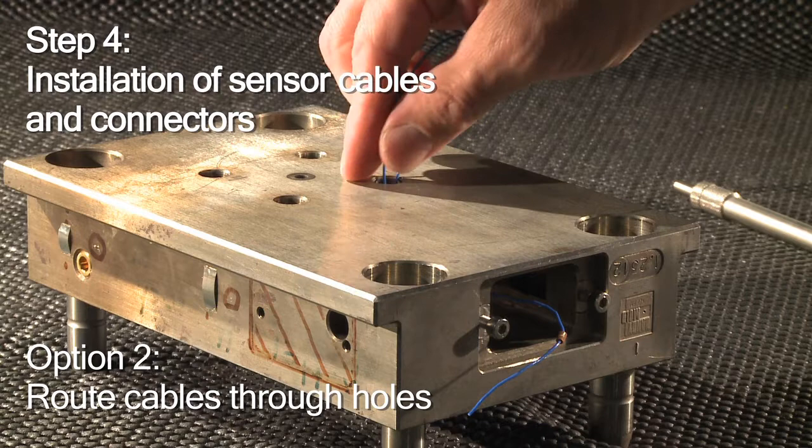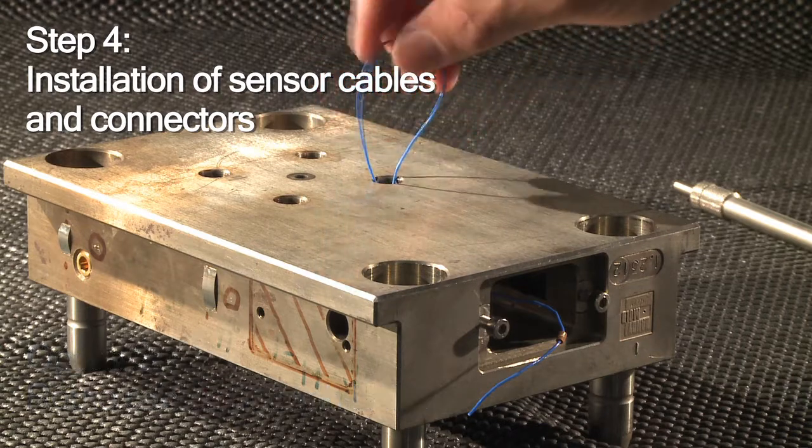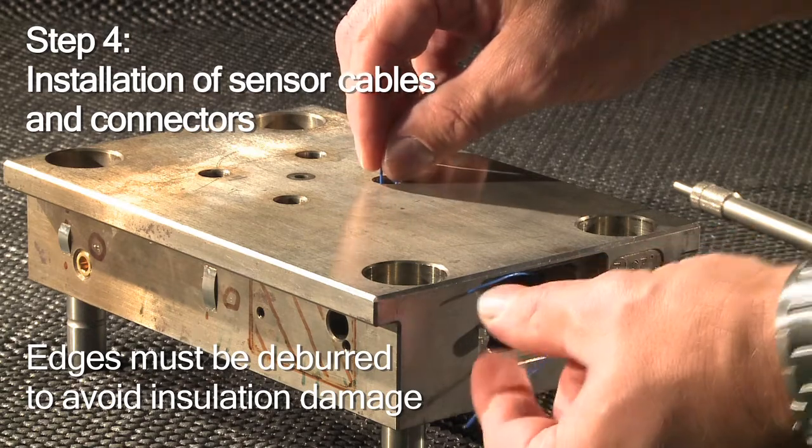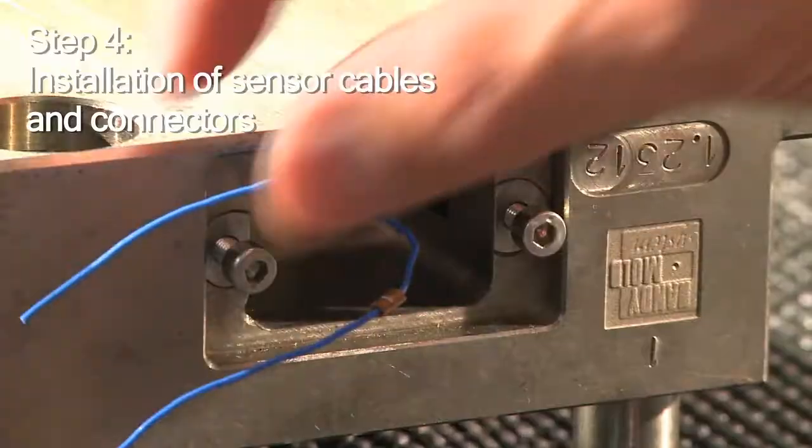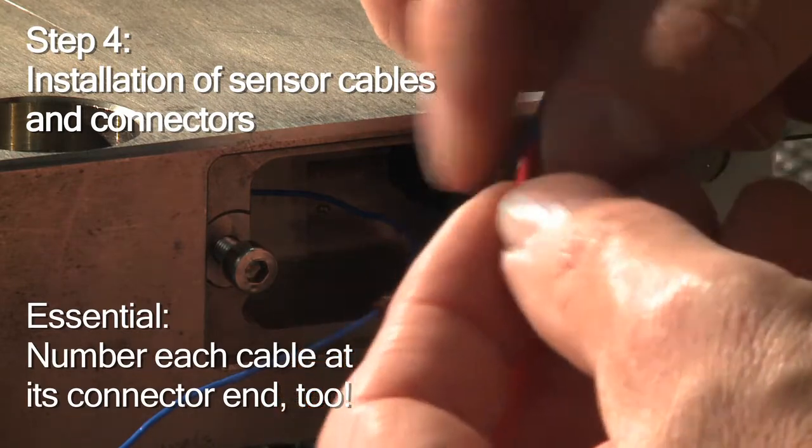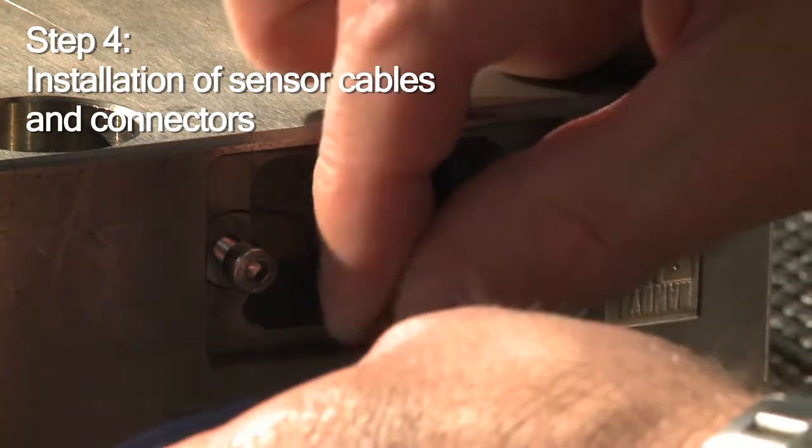In some tools, there are holes for cable routing. In any case, make sure that corners and hole edges are deburred to avoid damage to the cable's insulation coating. It's very important that you identify each cable using numbered markers.